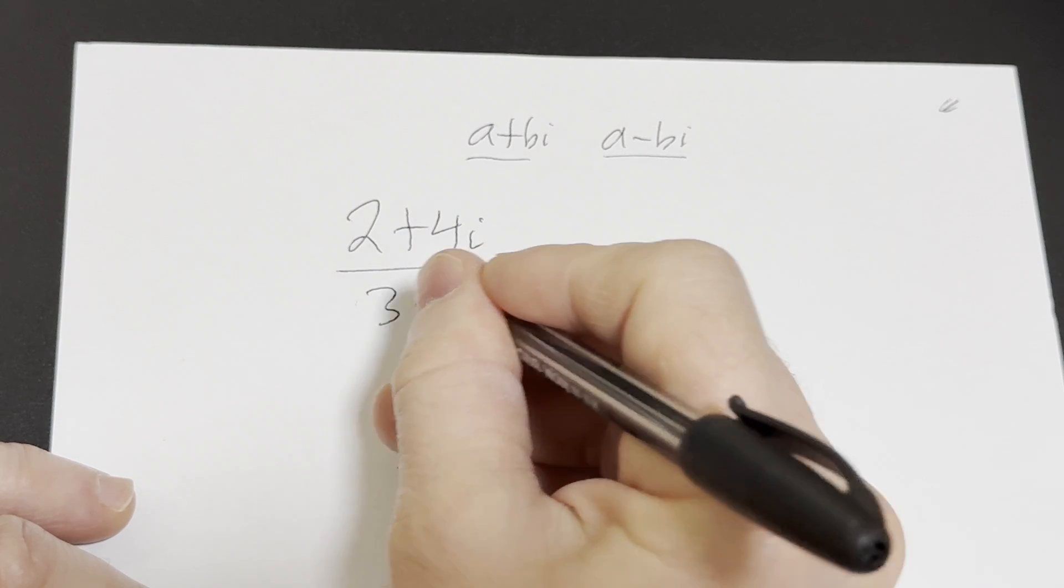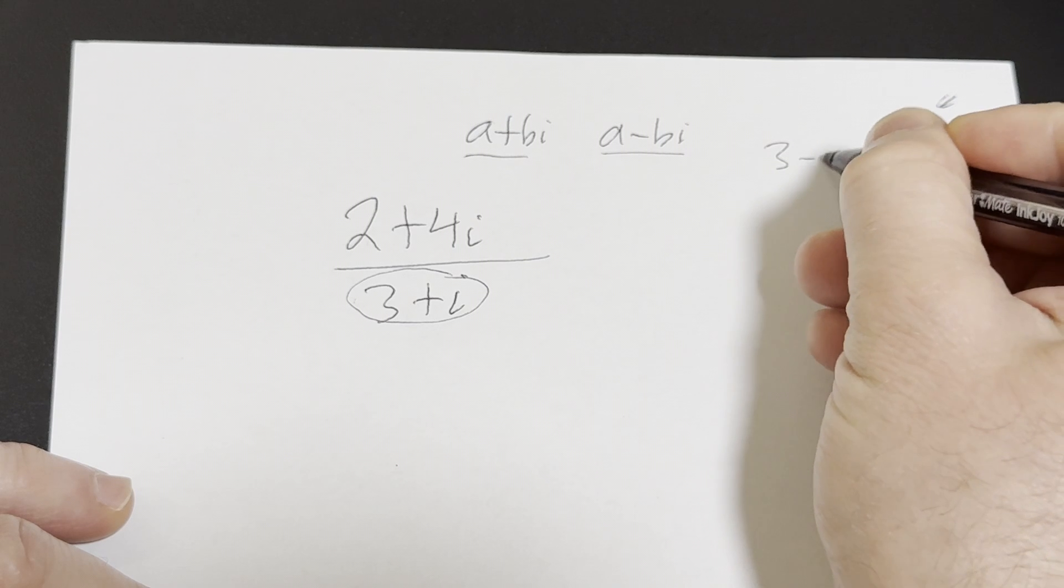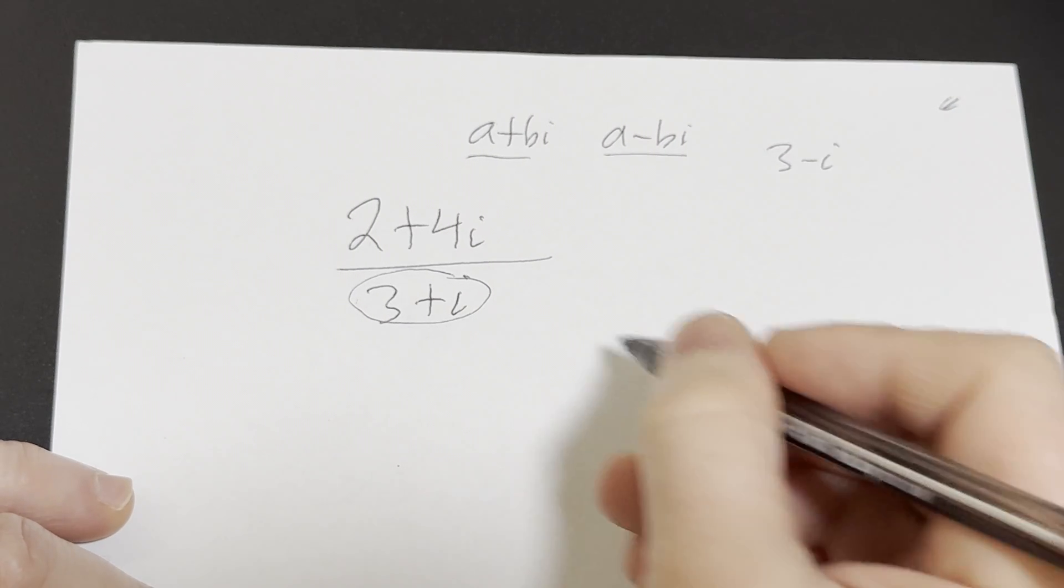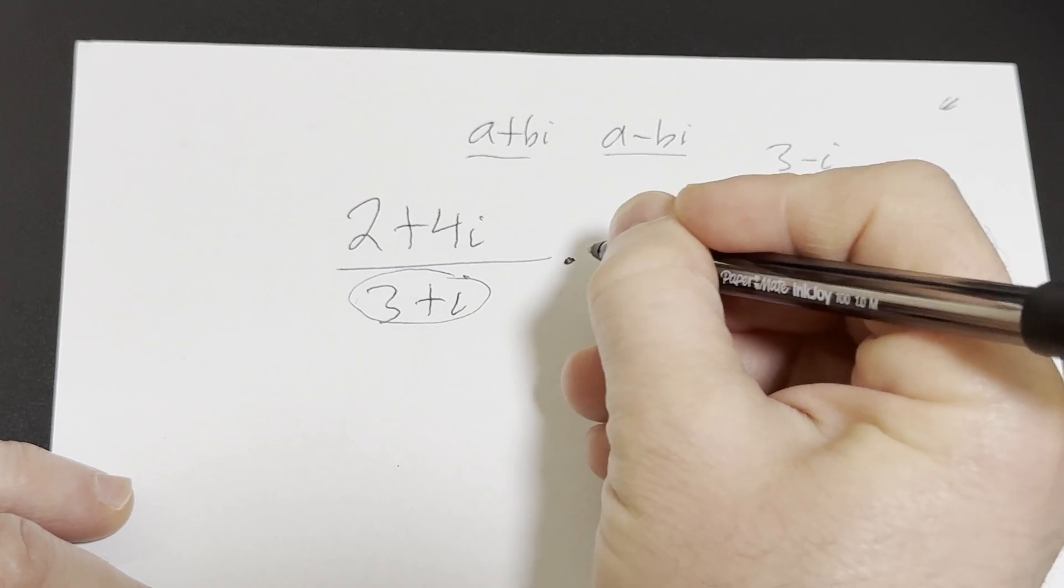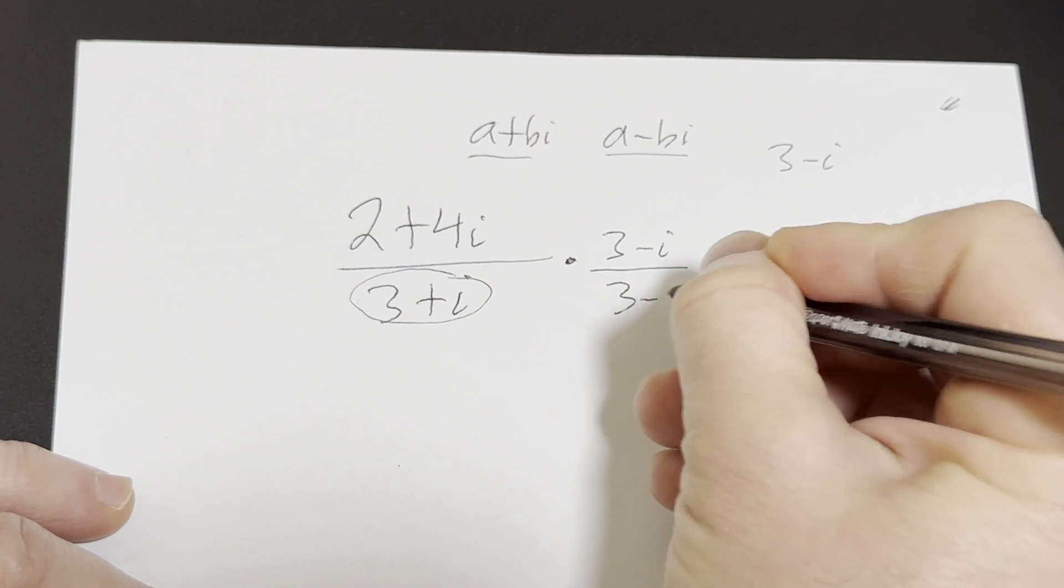So here we're going to find the conjugate of 3 plus i, which if we switch the sign it would be 3 minus i. So all we do here is multiply by 1 in a clever way, 3 minus i over 3 minus i.